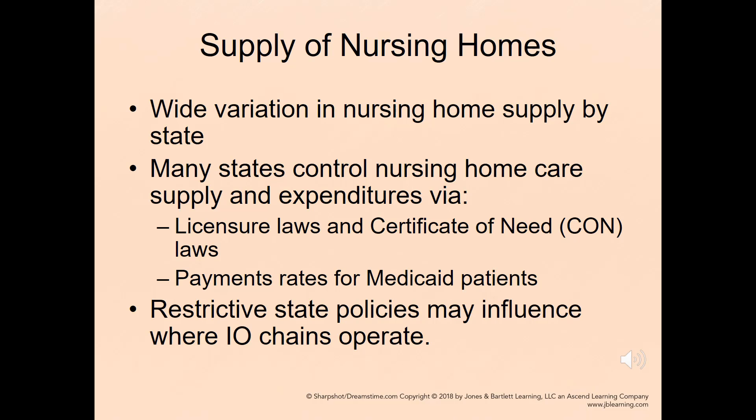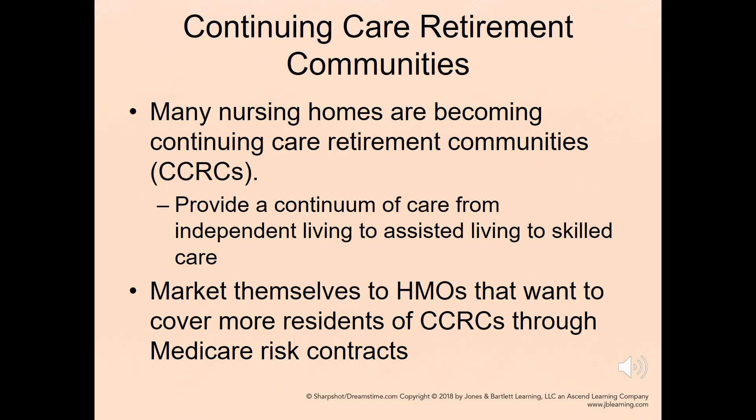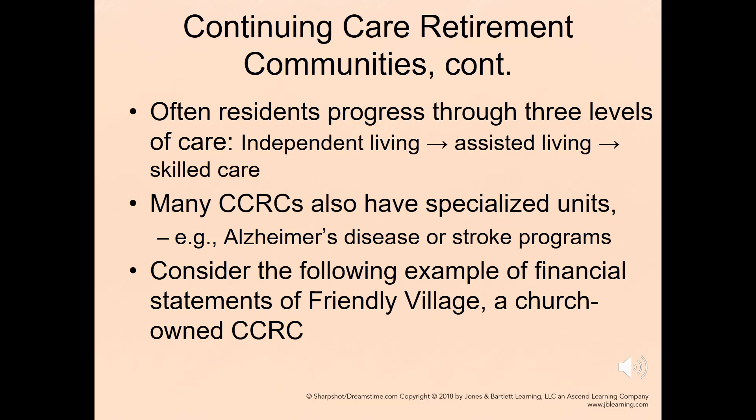Restrictive state policies may influence where investor-owned chains choose to operate. Many nursing homes are becoming continuing care retirement communities, or CCRCs, where they provide a continuum of care from independent living to assisted living to skilled care. They market themselves to HMOs that want to cover more residents through Medicare risk contracts. Residents often progress through three levels of care: independent living, then assisted living, and ultimately skilled care.